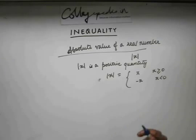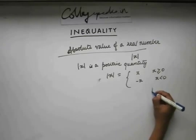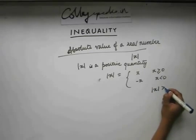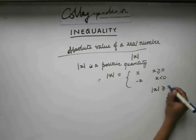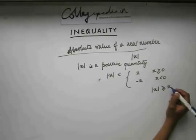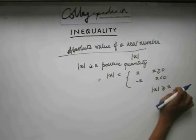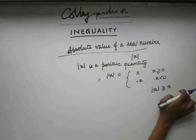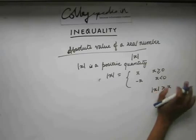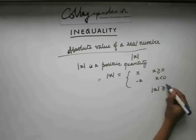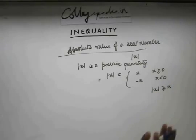Since mod x is always positive, we can write mod x is greater than or equal to x. Mod x will be greater than x when x is negative, and mod x is equal to x when x is positive. So, mod x ≥ x.